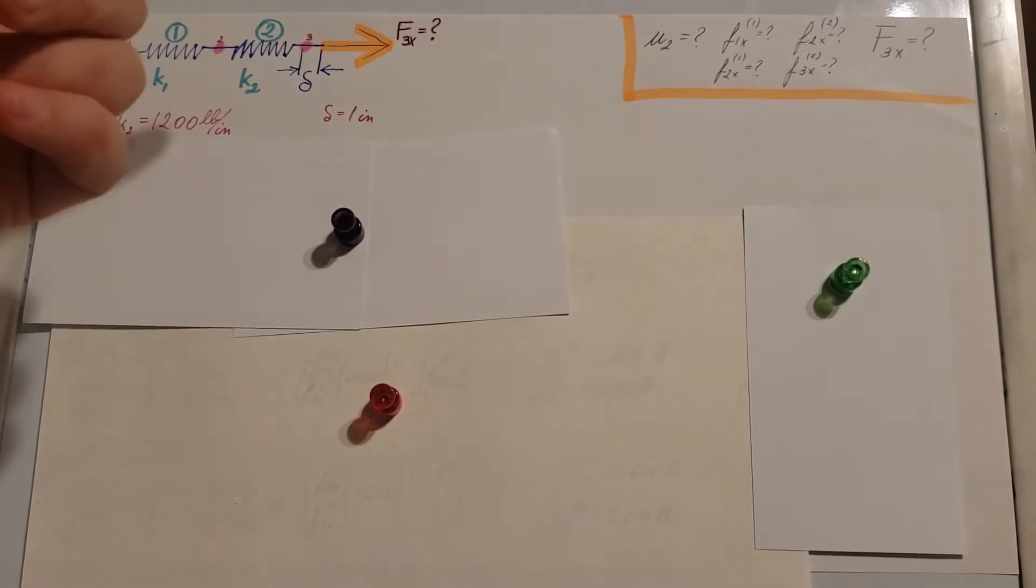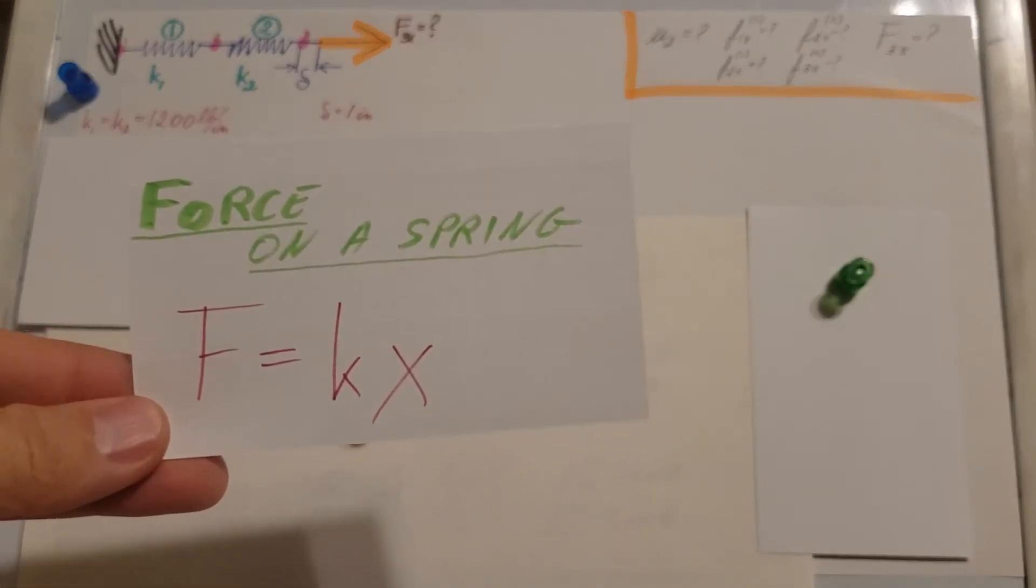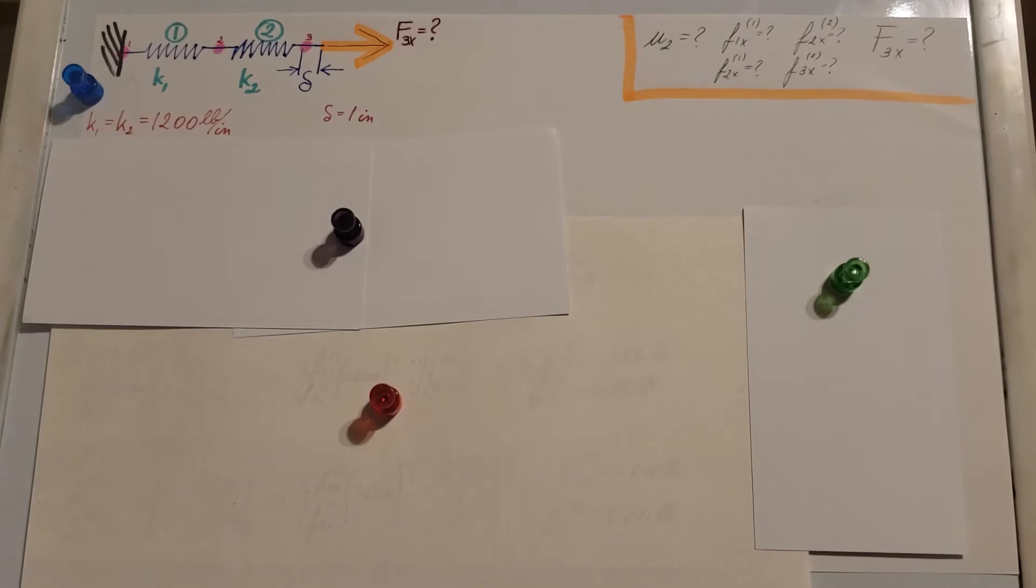Since we are working with spring representations, we're going to be relying on this formula, which is force on a spring, F equals KX. We can't use it right away because we need it in matrix form. So let's go ahead and find our K first.